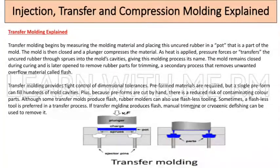Transfer molding begins by measuring the molding material and placing uncured rubber in a pot that is part of the mold. The mold is then closed and a plunger compresses the material as heat is applied. Pressure forces or transfers the uncured rubber through sprues into the mold's cavities, giving this process its name.